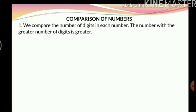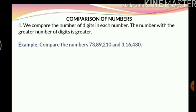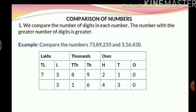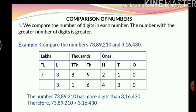Let's see an example. Compare the numbers 73,89,210 and 3,16,430. To make it easier, I will put these numbers in the place value chart. As you can see, the number on top has 7 digits while the number below has 6 digits. Therefore, by using rule number 1, 73,89,210 is greater than 3,16,430.